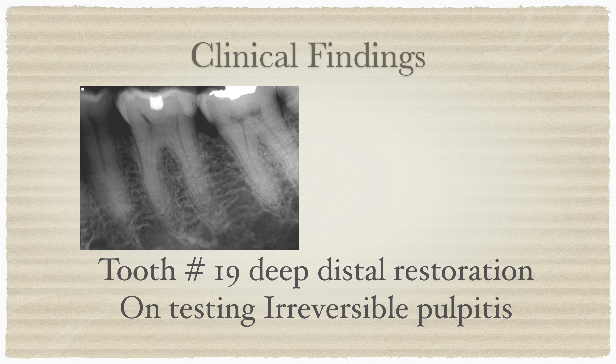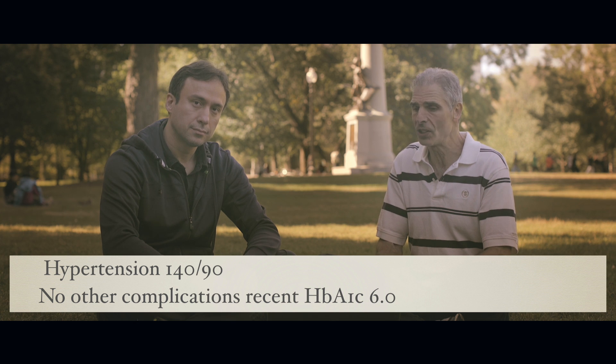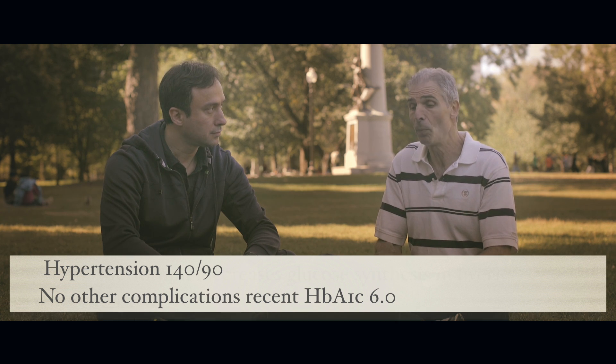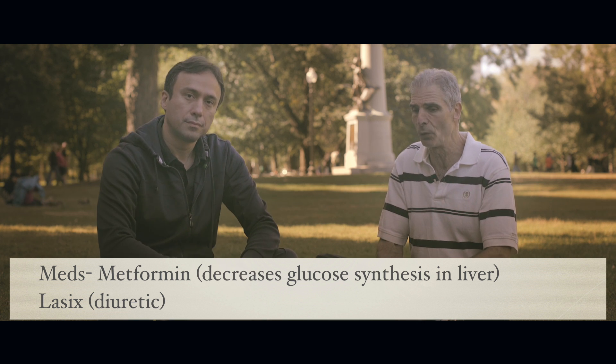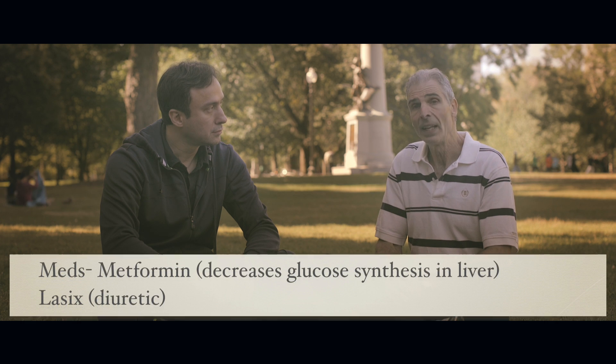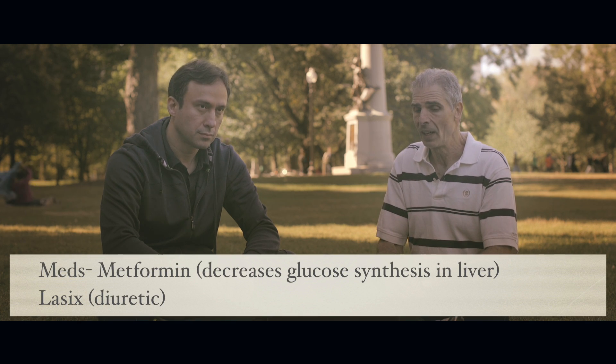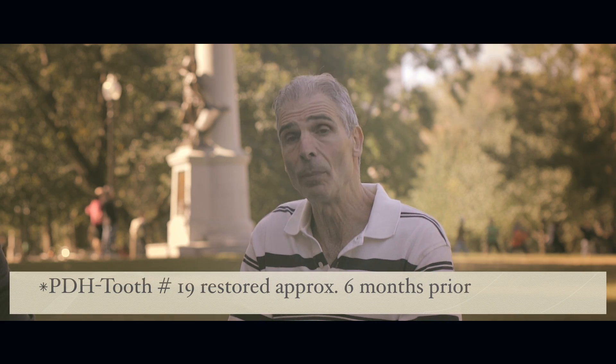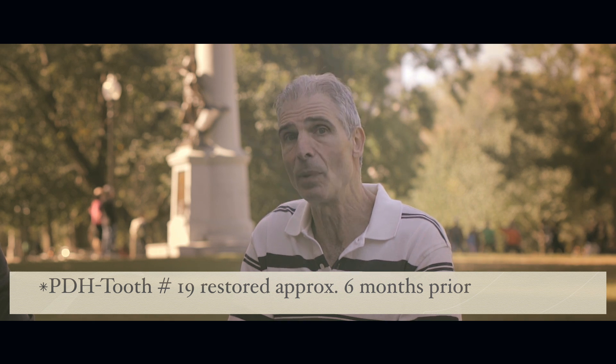Our case today involves a 53-year-old African-American male who was referred to us for endodontic treatment of tooth number 19. His past medical history showed type 2 diabetes, which was fairly well controlled. He had a history of hypertension with a resting blood pressure of 140 over 90. He had no other complications and an HbA1c of 6.0. In terms of his medications, he was taking metformin, which tends to decrease glucose synthesis within the liver, Lasix which is a diuretic, atenolol which is a beta blocker that tends to slow his heart, and Lipitor which is a statin for reducing cholesterol levels. His past dental history involved tooth number 19, which was restored approximately six months prior to him coming in.